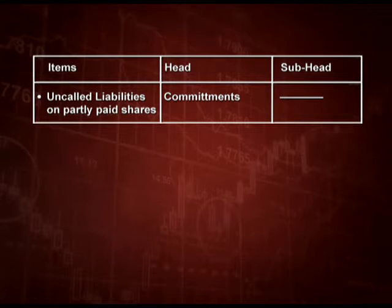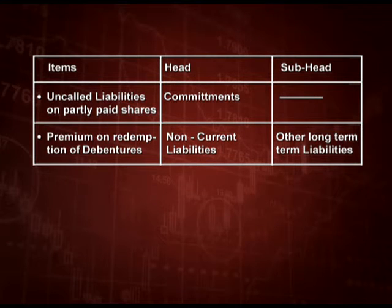Let us look at where specific items appear in the balance sheet with their head and sub-head. Uncalled liability on partly paid shares is shown under the head 'Contingent Liabilities and Commitments' in the notes to accounts. Premium on redemption of debentures is shown under non-current liabilities, sub-head 'Other Long-Term Liabilities,' since it must be paid in future — this type of question commonly appears in exams.